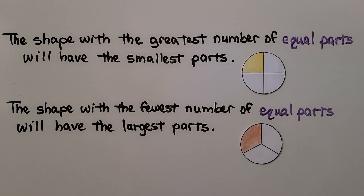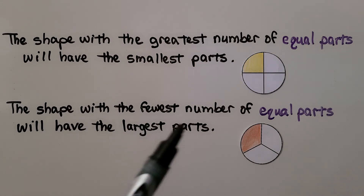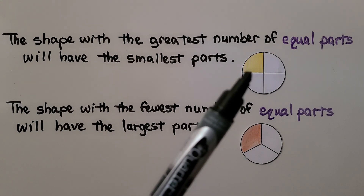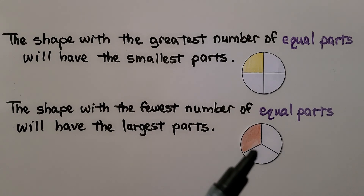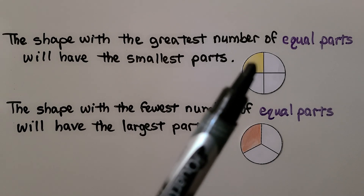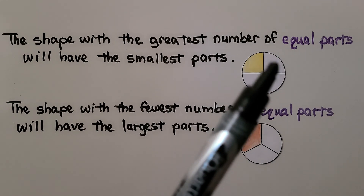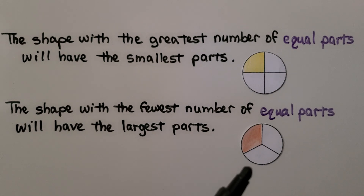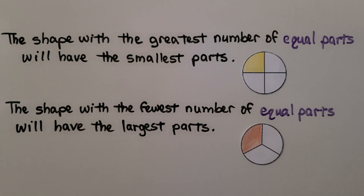The shape with the greatest number of equal parts will have the smallest parts, and the shape with the fewest number of equal parts will have the largest parts. This circle is split into four equal parts, and this one is split into only three equal parts. This part is smaller than this part because we have more parts, so each piece is smaller. This one has fewer parts, so each part is greater.